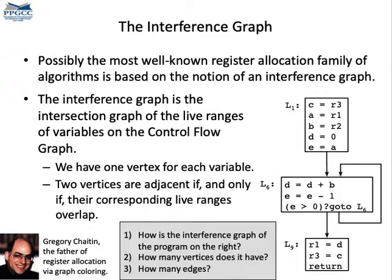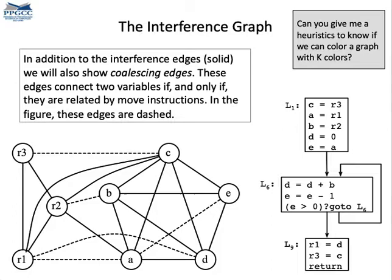Let's use this program on the right to perform register allocation. This is the interference graph of the program. We use solid edges meaning that we have variables whose live ranges overlap and we use dashed edges denoting pairs of variables that are related by a copy instruction. Usually it helps to keep track of these variables because it's good to map them to the same register.